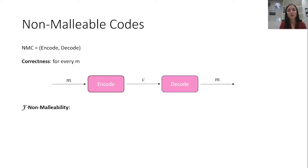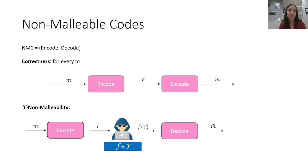The second property is called f-non-malleability. There, we require that if an attacker chooses a tampering function f from the predefined set ℱ, and is allowed to observe the message corresponding to the evaluation of f over the codeword c,